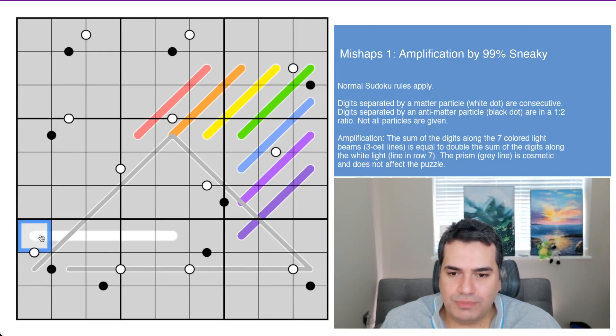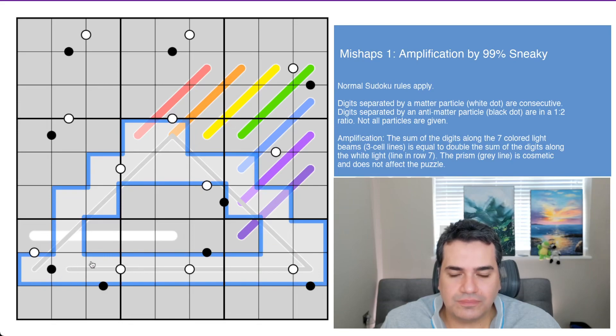You also have what is presumably a white light here on the left side of the puzzle and a prism that's breaking it all out. Now I'm not sure what any of these lines actually mean, but I'm sure the rules will explain it to us momentarily.